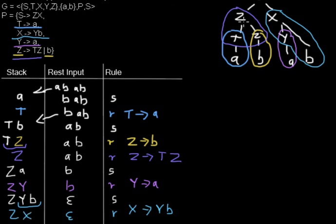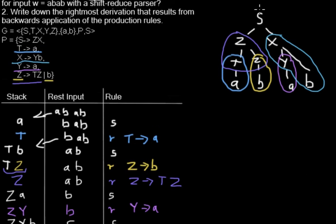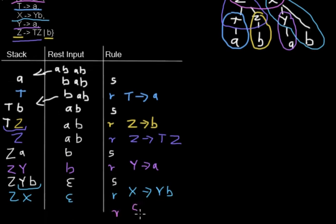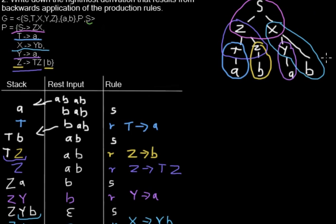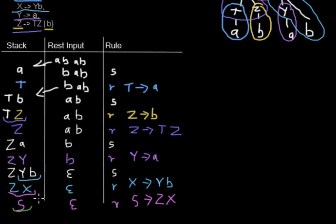In the last step, I can reduce Z and X to the start symbol using the rule X derives to ZX. I replace both symbols by the start symbol. If there is a start symbol on the stack and nothing else, and the rest input is empty, then the input string is accepted.